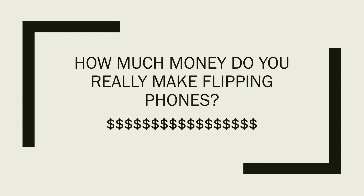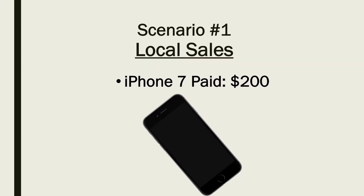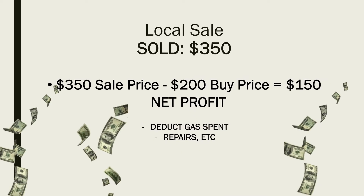So this is the presentation I just made — two really easy scenarios with made-up numbers for simple examples. Scenario number one is local sales. For the example I picked an iPhone 7 that we paid $200 for. Local sales are super simple: I bought it for $200 and sold it in the local marketplace for $350. We subtract the $200 buy price from the $350 sale price and get a $150 net profit. You can deduct gas, repairs, etc., and that leaves your total actual net profit.